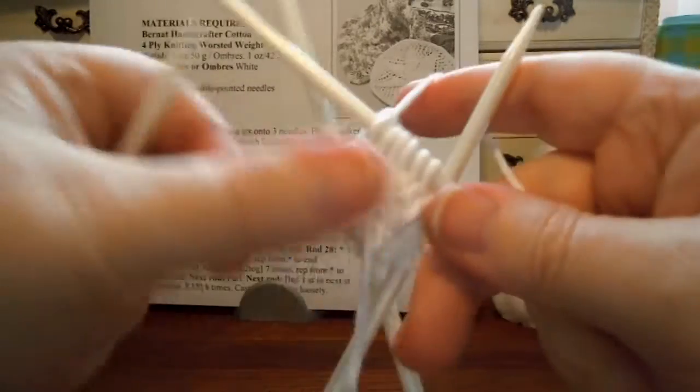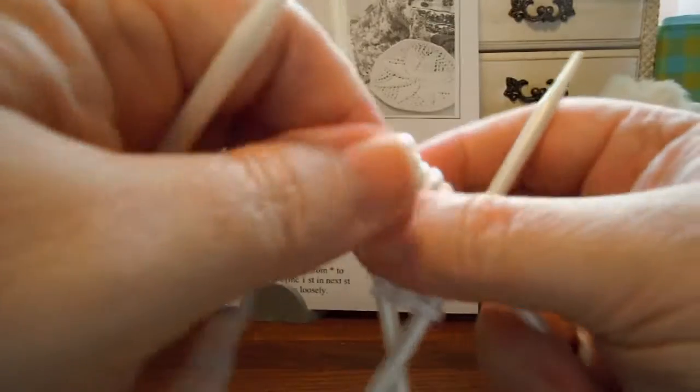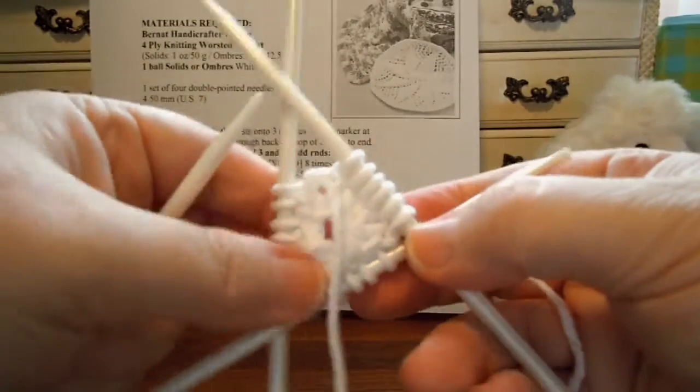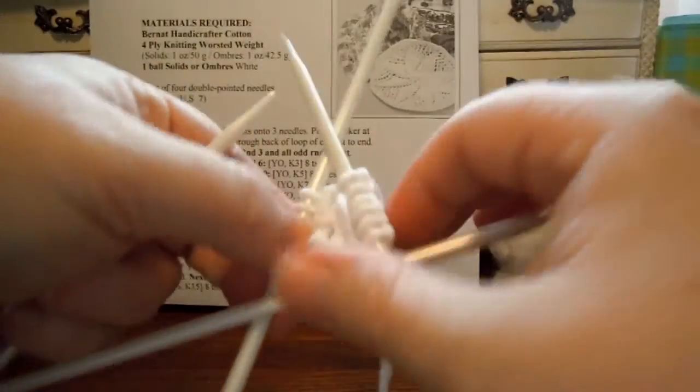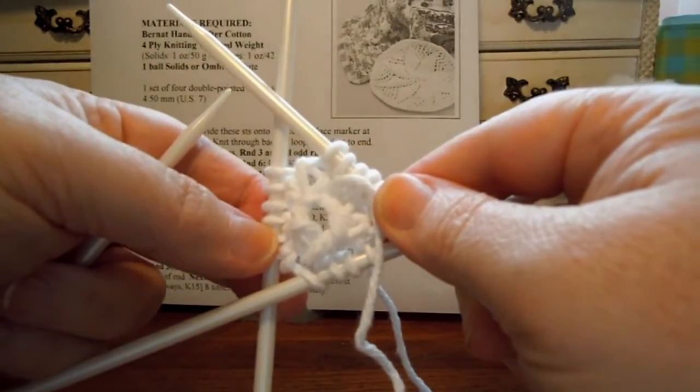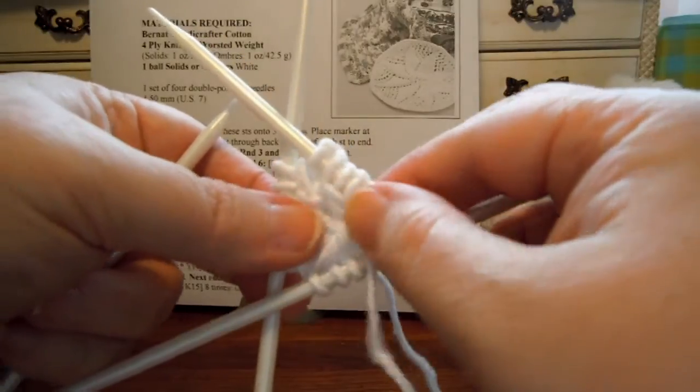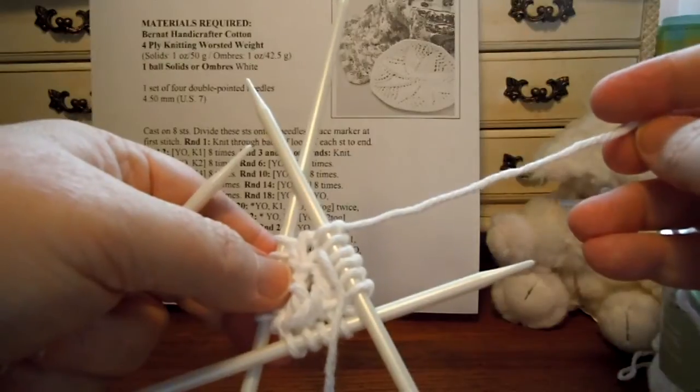So now we've finished round three. So that was round one, two, and three. And I will see you in the next video when we start round four. And this is how your stuff looks right now. It doesn't look like much. It looks like a belly button. Anyway, I'll see you in the next video for round four.